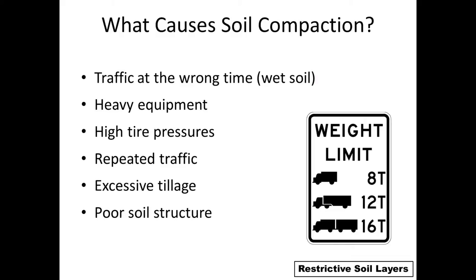To address compaction, we need to know what causes it. Number one is trafficking at the wrong time — getting out in fields when they're too wet with our equipment, essentially crushing soil aggregates and squeezing out pore space. Another factor is that equipment has been getting bigger and heavier over the years. Axle loads have increased tremendously in recent decades, contributing to incidents of compaction. This growth in equipment relates to the shift on farms where we need to farm larger areas to stay profitable. Also, running tires at higher pressure than recommended by the manufacturer is a big problem.